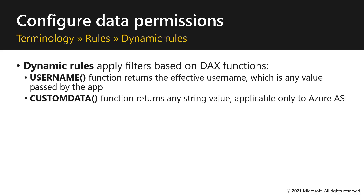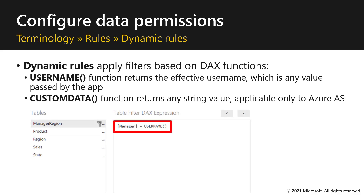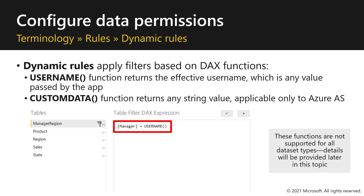Dynamic rules apply filters based on DAX functions. There are two functions to consider: the USERNAME function, which returns the effective username — in the case of Power BI report embedding, this is a value that the app passes — and the CUSTOMDATA function, which can return any string value but is applicable only to Azure Analysis Services. In this example, the rule filters the manager region table, specifically filtering the manager column to include only rows where it equals the result of the USERNAME function. Note that these functions are not supported for all dataset types, and more granular details will be provided in the next video.